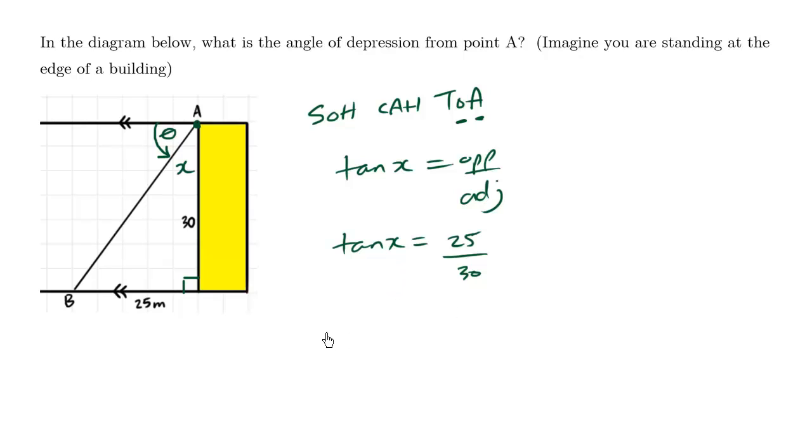We take the inverse trig on both sides. So we get X equals tan inverse on your calculator in degree mode. This is going to be tan inverse of 25 over 30. So X is approximately 39.81 degrees.